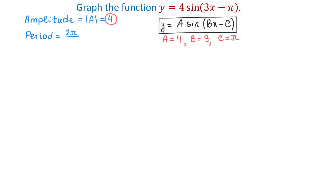Next we will find the period, and the formula is 2 pi divided by b. We will replace b with 3, and the period will be 2 pi over 3. This means that over this period the function will complete one full cycle.